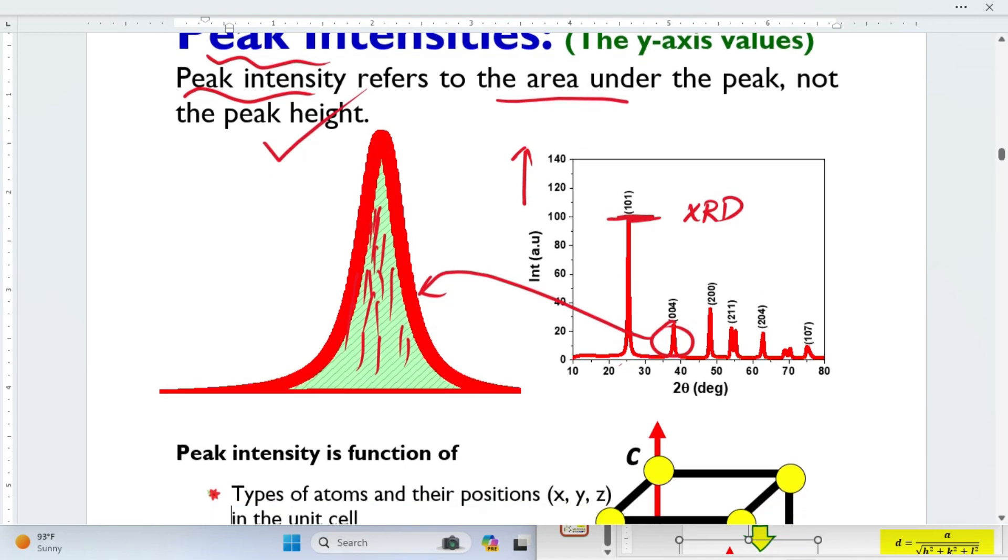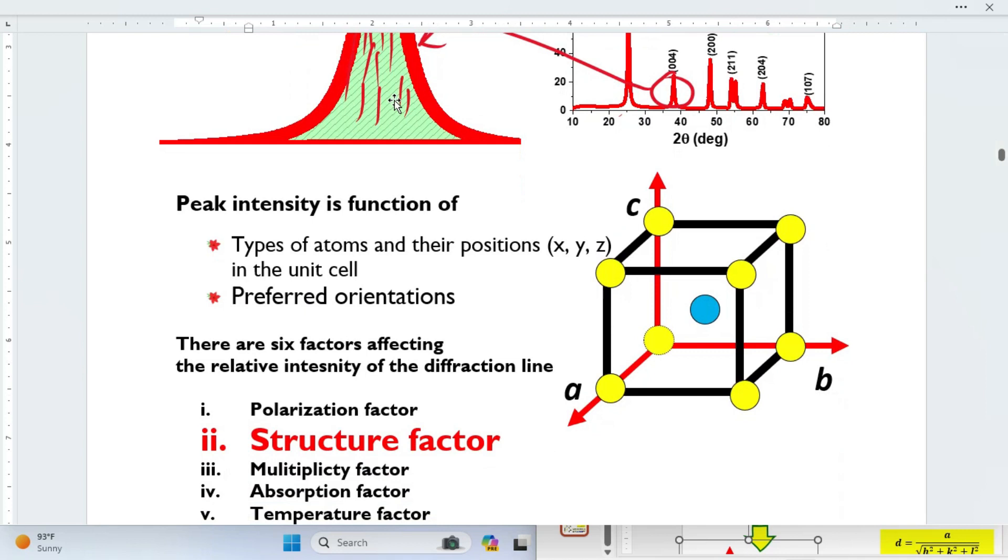Peak intensity basically depends on two things. The first is the types of atoms, whether the atoms are small or big. For example, carbon is one type of atom. Lead is another type of atom. Tin is another type of atom. So it depends on the types of atoms.